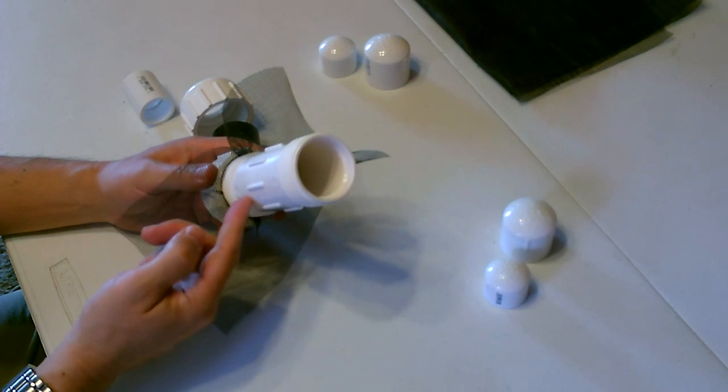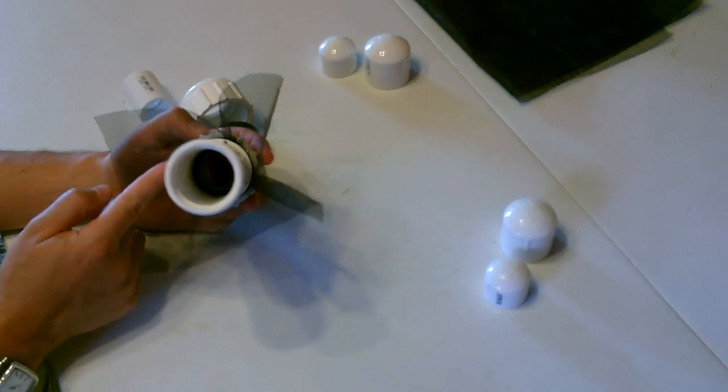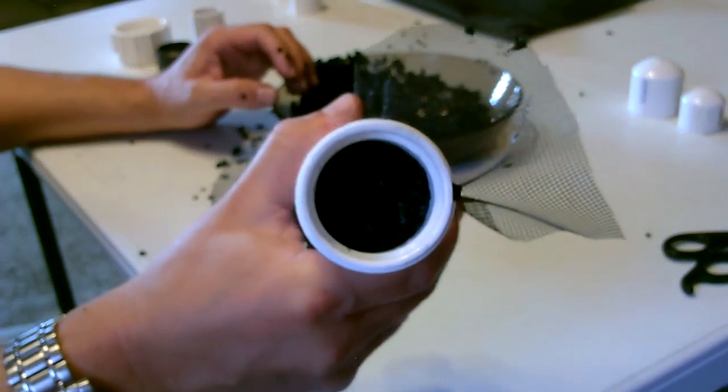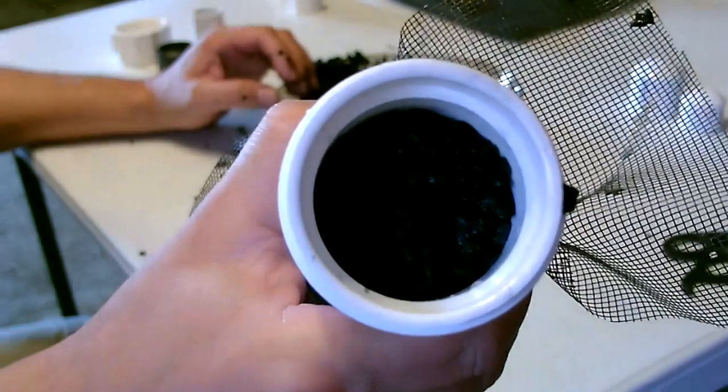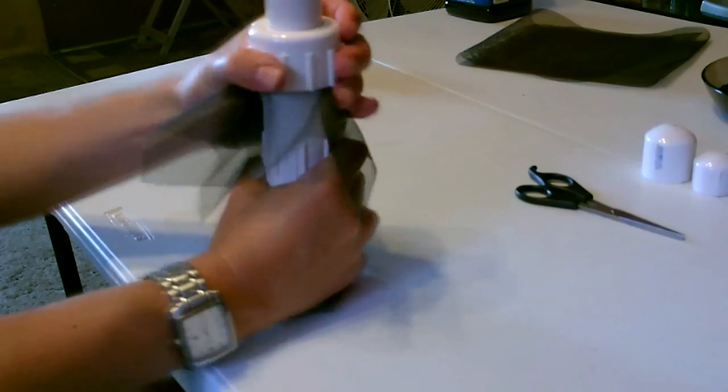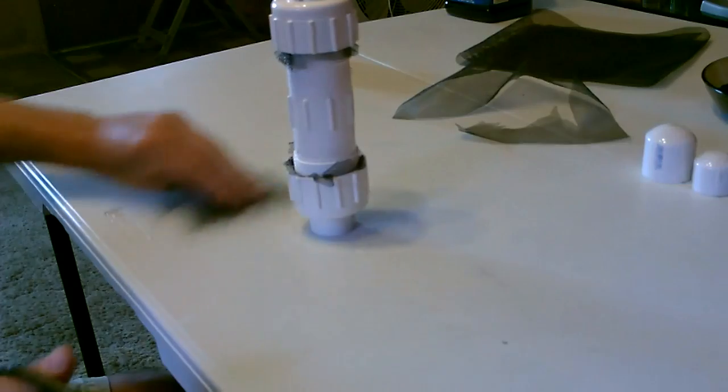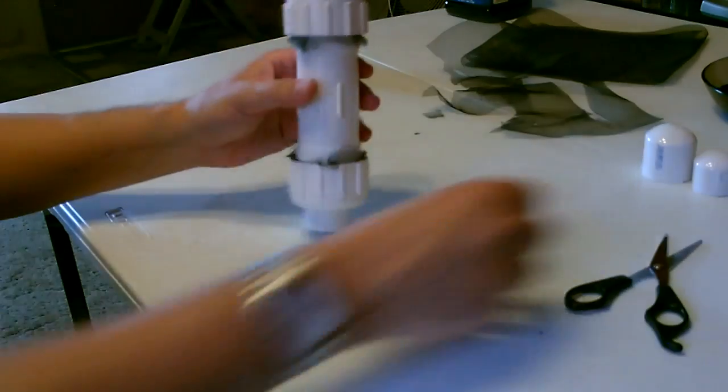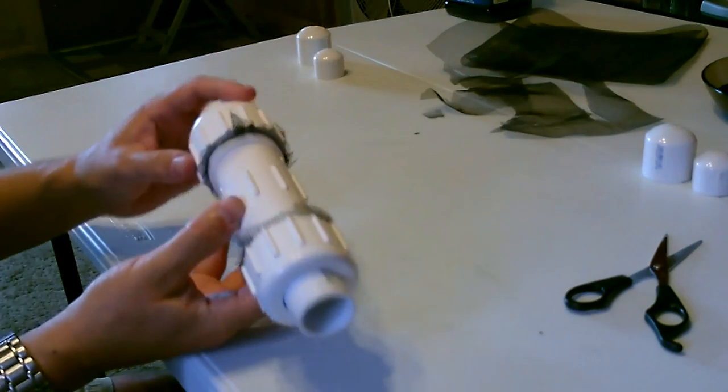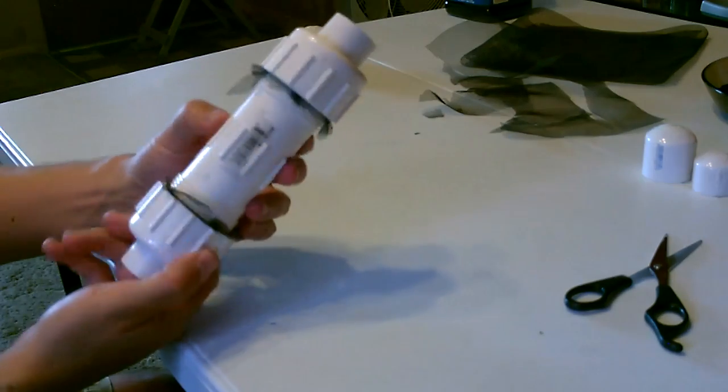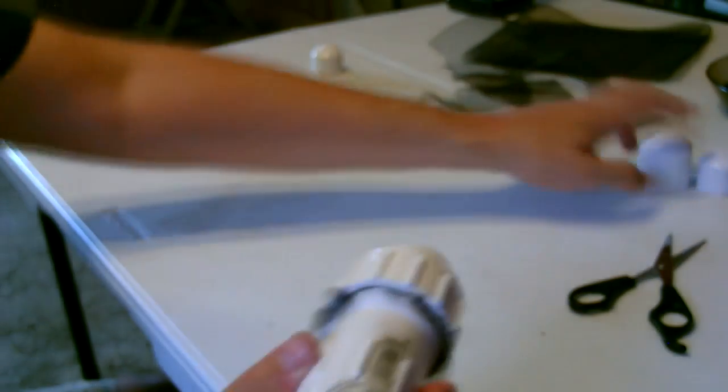Now all you do is add the rinsed activated carbon in the cylinder and put the other end on and trim it down. There it is. I'm going to go ahead and clean this up later, and then these are optional but you can cap them off on the ends if you want.